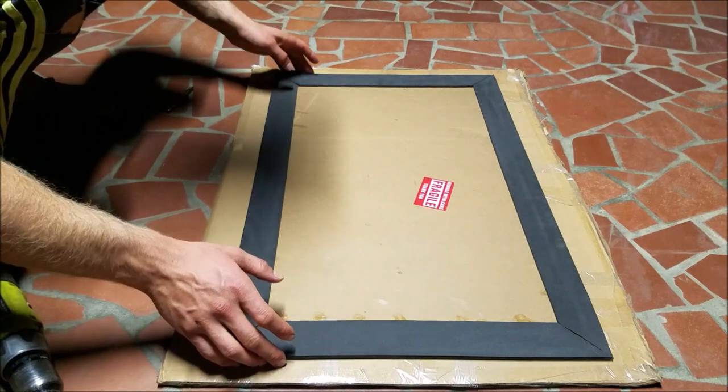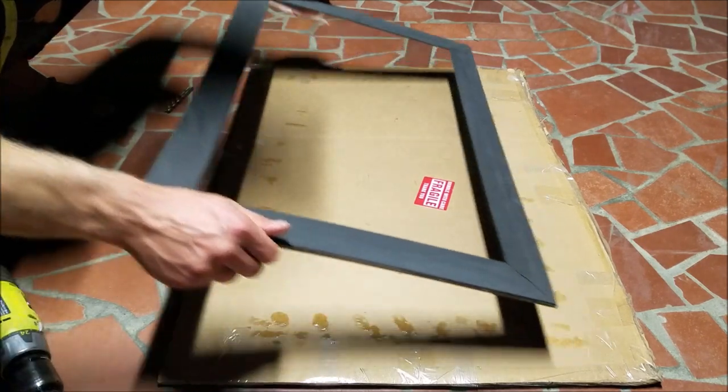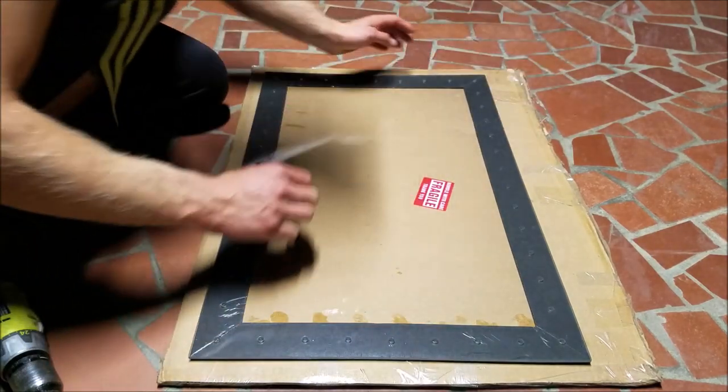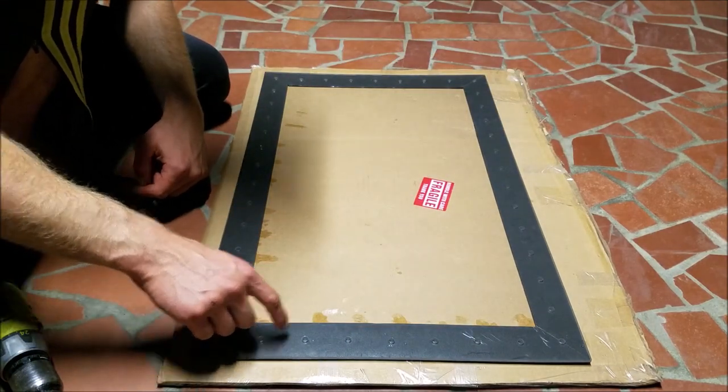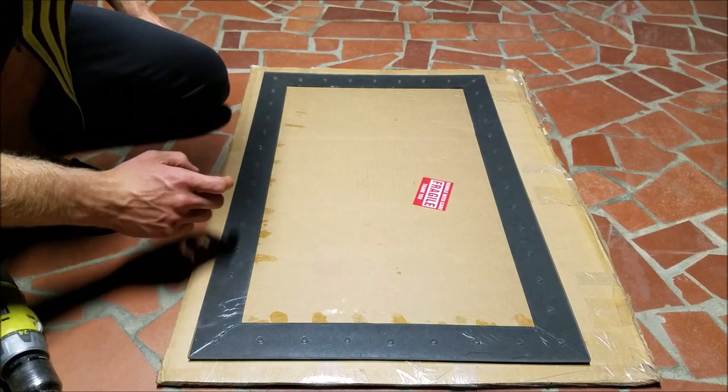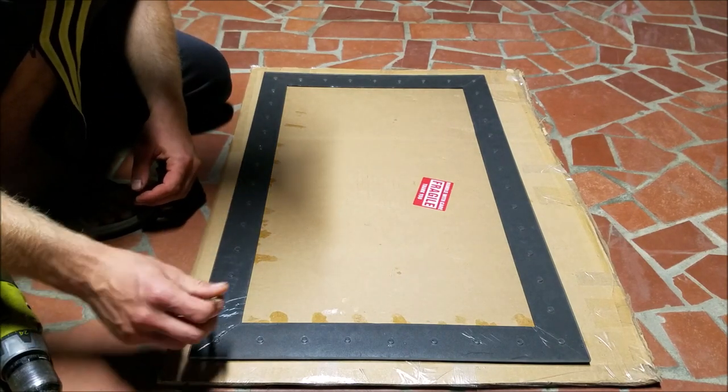Now that we have that all squared away, what you want to do next is flip it over and we're going to drill holes through the gasket. The hole size of these holes are a quarter inch.